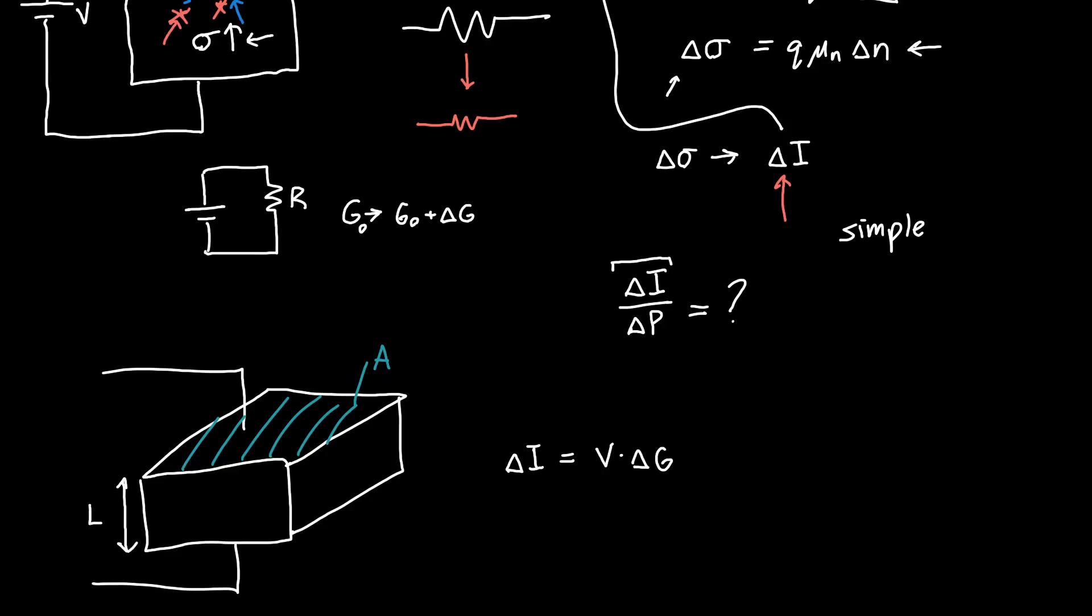The conductance, or the change in conductance delta G, is just whatever our area is divided by our length times delta sigma. But we know what delta sigma is for a semiconductor.